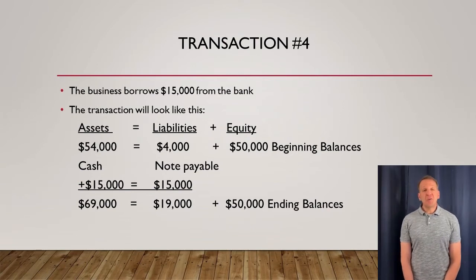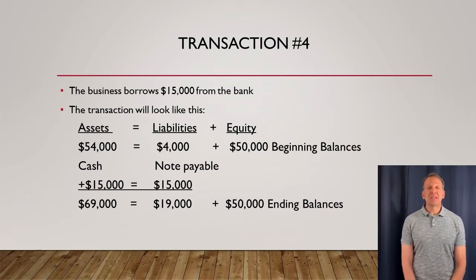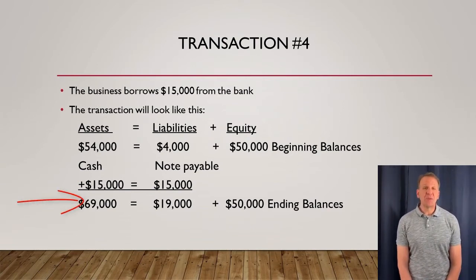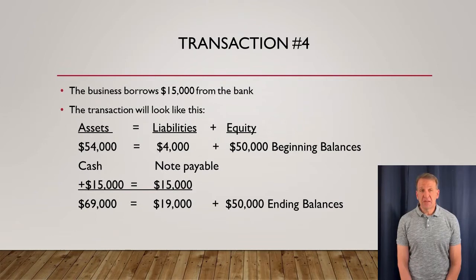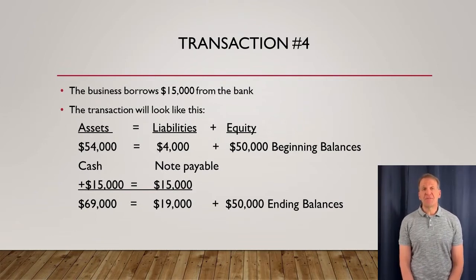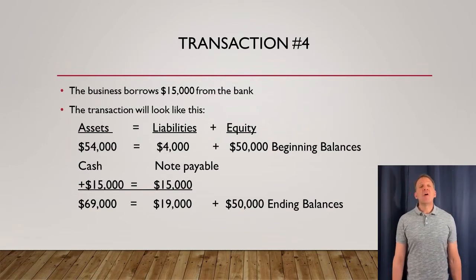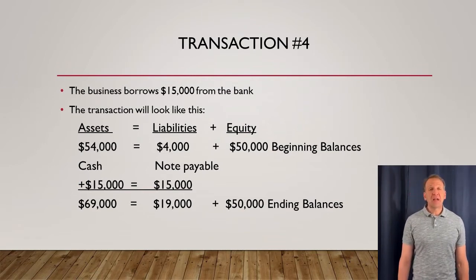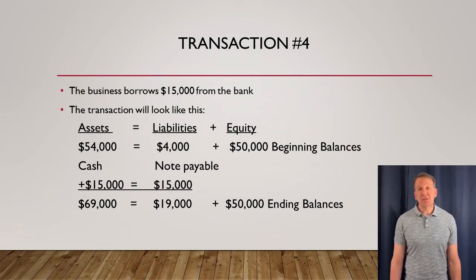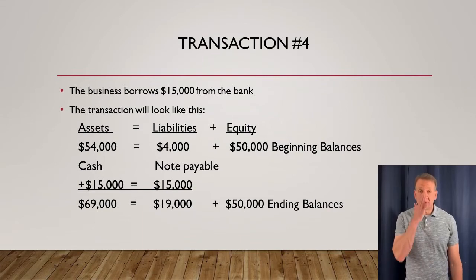Under the ending balance, we're still in balance: our assets are $69,000 in total, our liabilities are now $19,000 — that's $15,000 for this loan plus $4,000 accounts payable from the previous lecture — and equity stayed the same at $50,000.